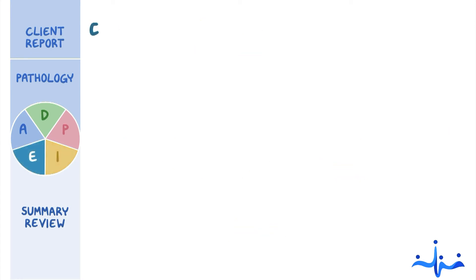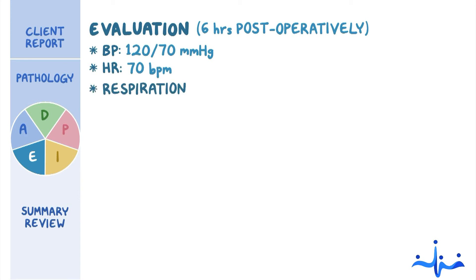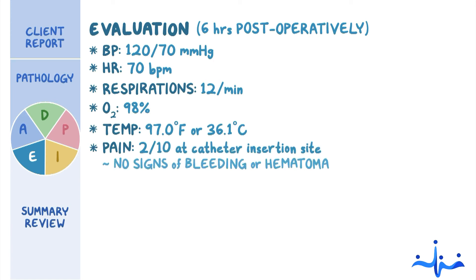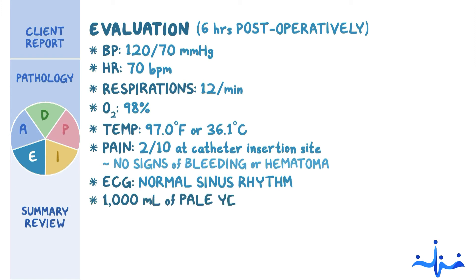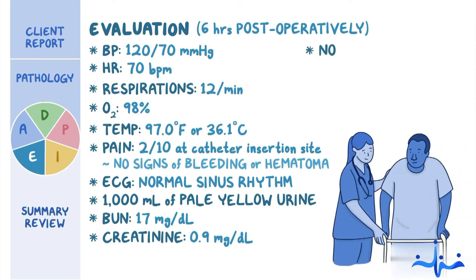Throughout your care for Mr. Harris, you document your nursing interventions and assessment findings. By 6 hours post-operatively, Mr. Harris' vital signs are blood pressure 120/70 mmHg, heart rate 70 beats per minute, respirations 12 per minute, oxygen 98% on room air, temperature 97.0°F (36.1°C), and pain 2 out of 10 at the catheter insertion site, which has no signs of bleeding or hematoma. His ECG shows normal sinus rhythm. He has voided 1,000 mL of pale yellow urine, and BUN is 17 mg/dL and creatinine is 0.9 mg/dL. Mr. Harris has been alert and oriented, able to ambulate with standby assistance, and has not reported chest pain.